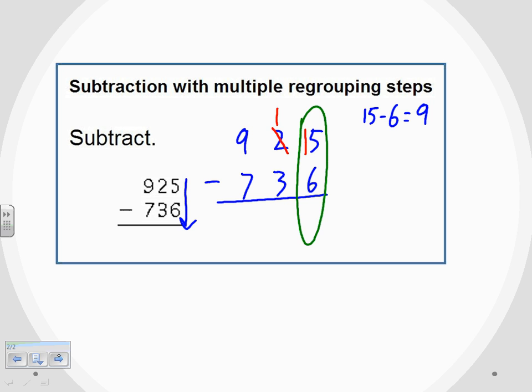Now that has fixed my earlier problem because I can do 15 minus 6. That is 9. So 15 minus 6, I can put the 9 straight below, and I would then move over to the next column.